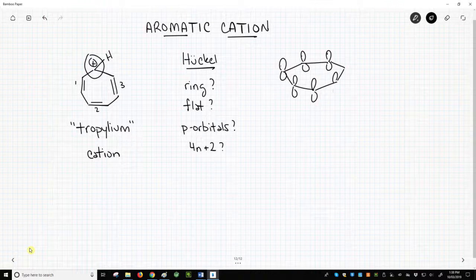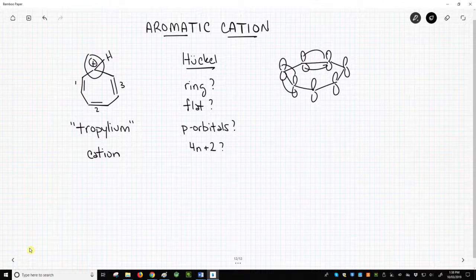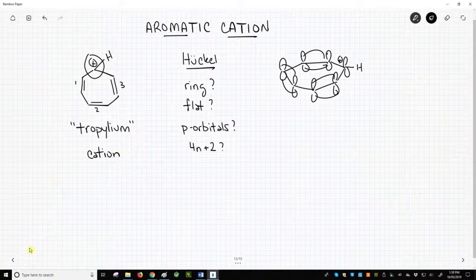Here are all of our p orbitals in the ring. Most of these are pi bonds, and then we have this vacant p orbital for our carbocation.